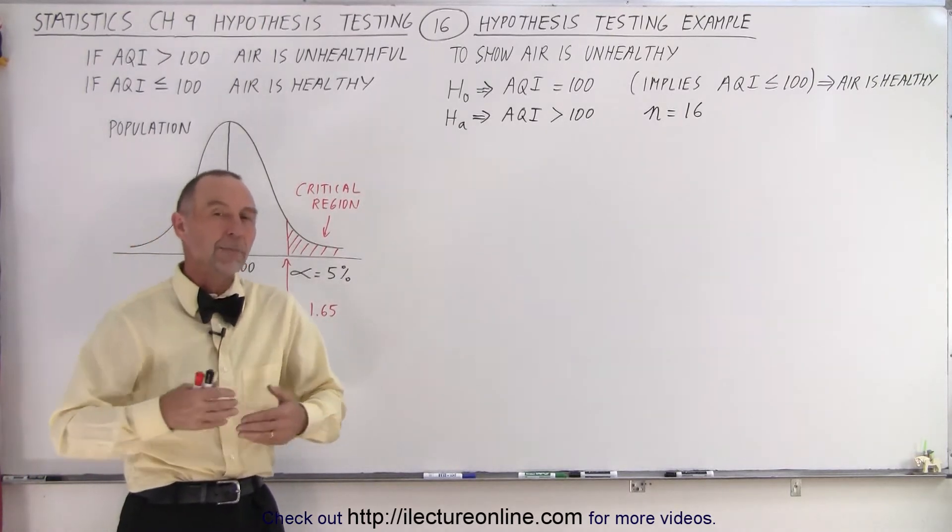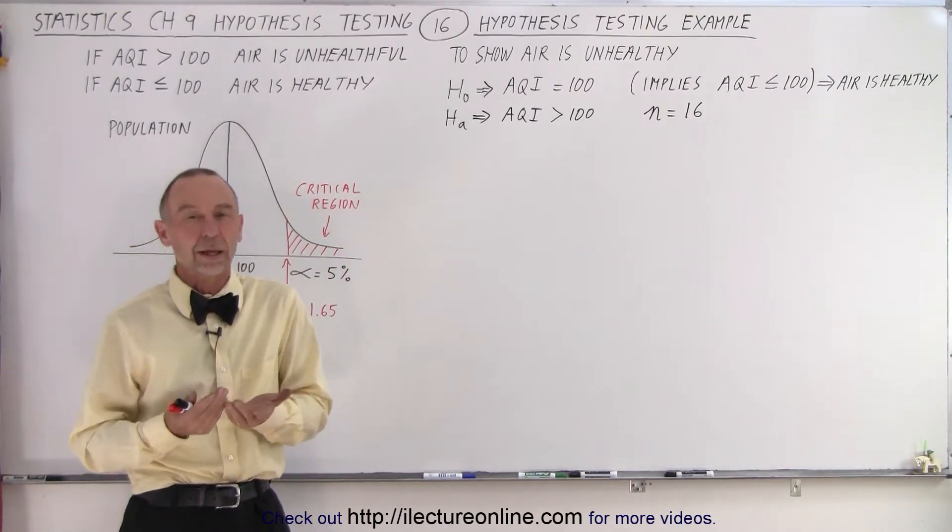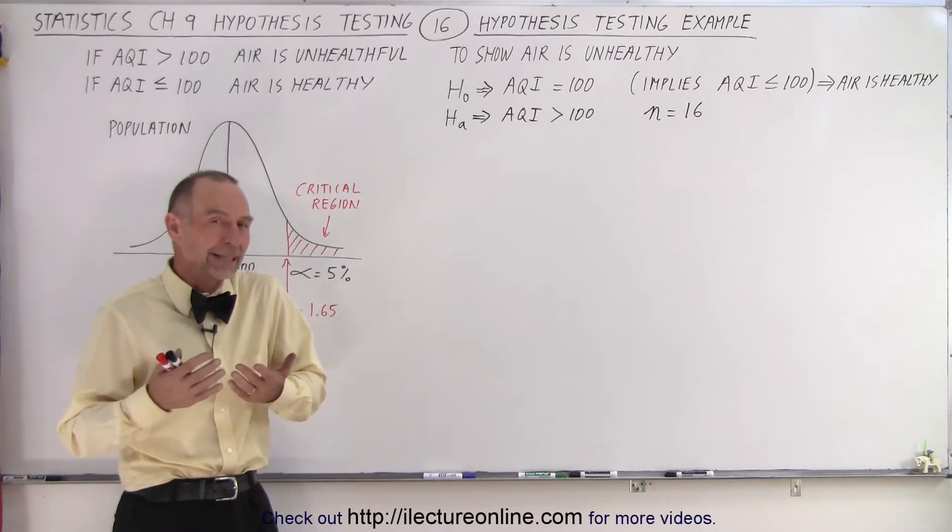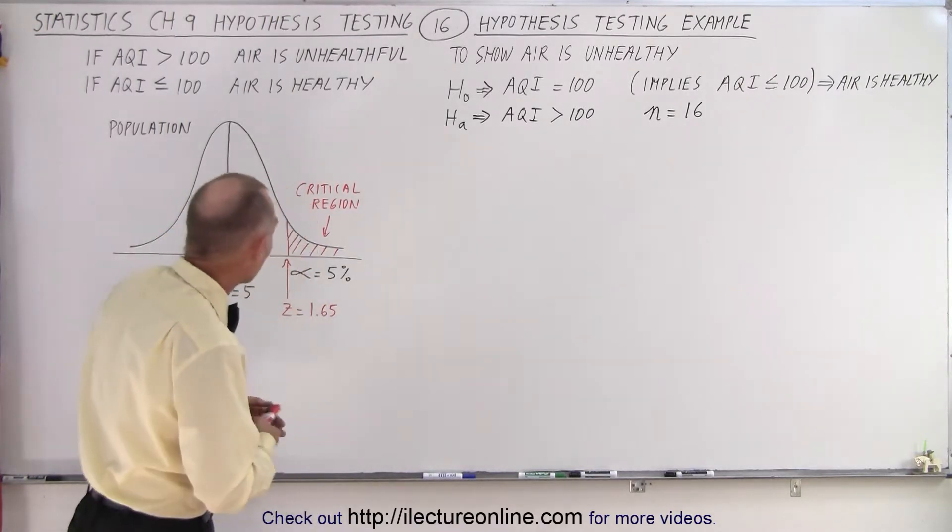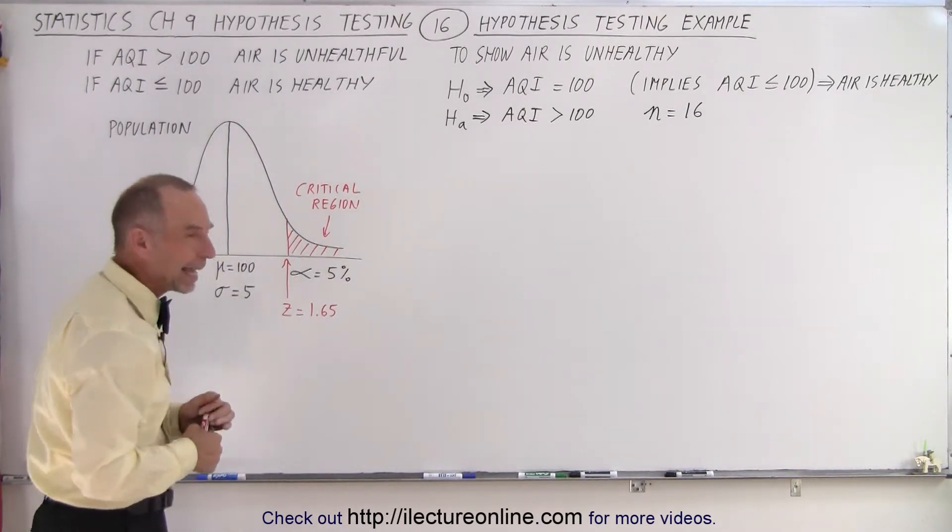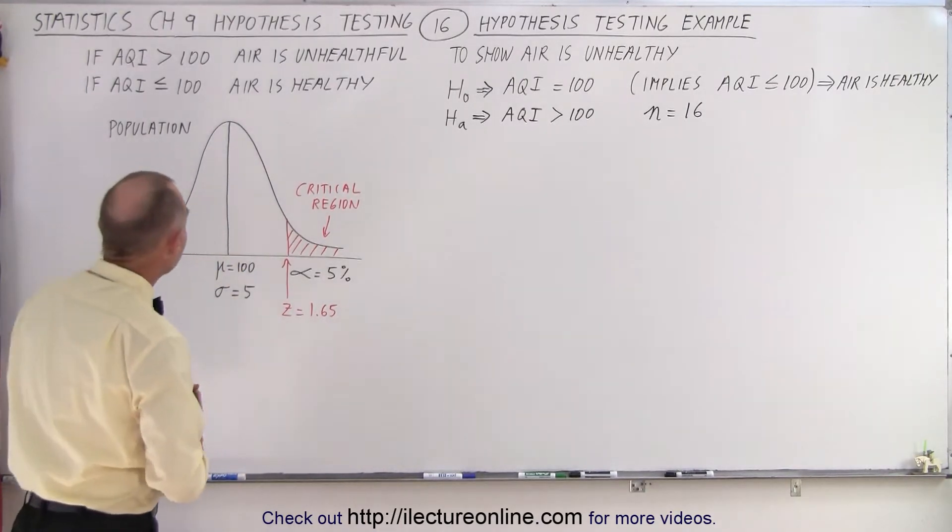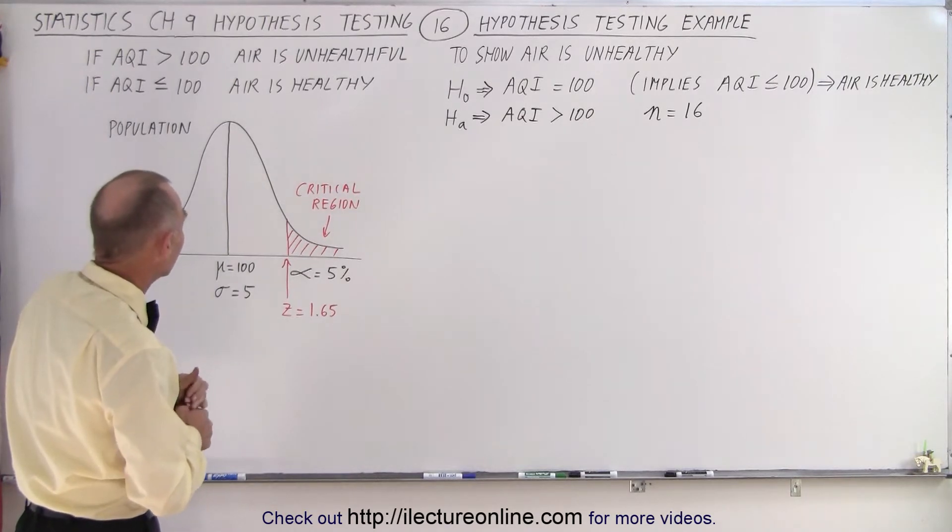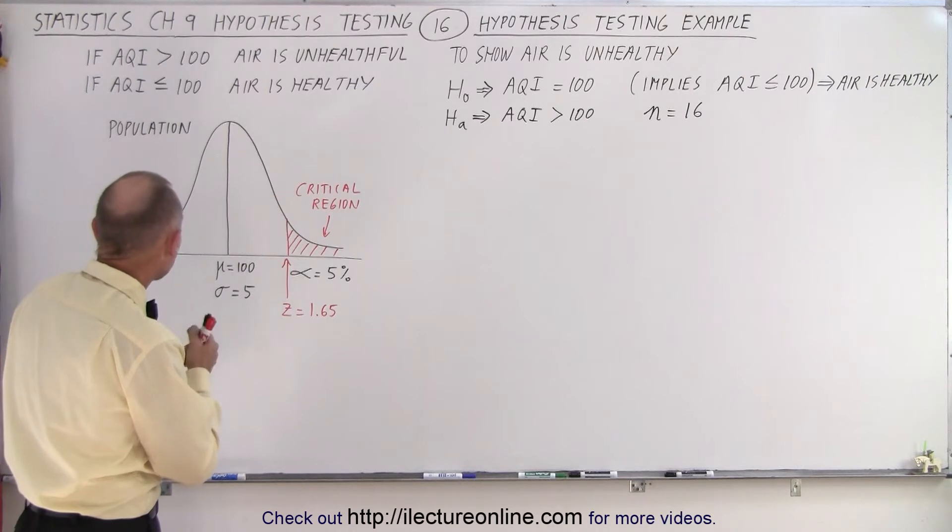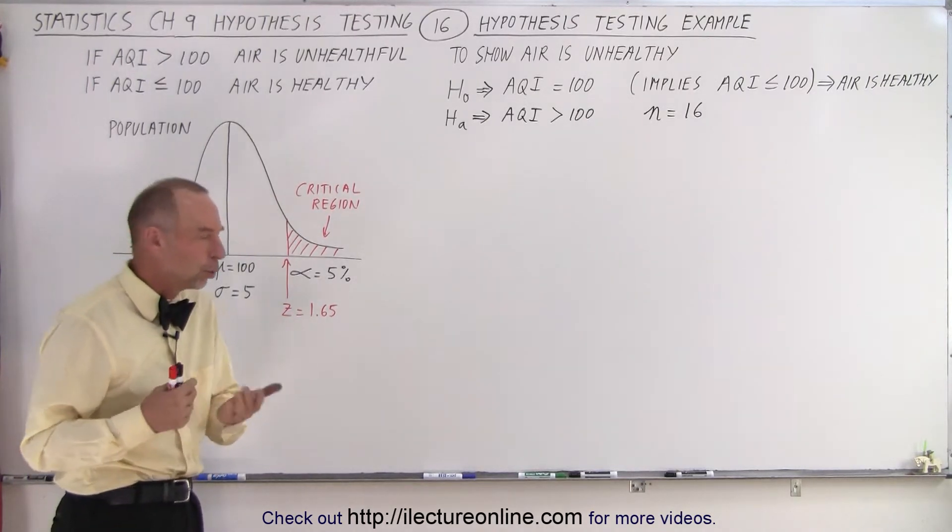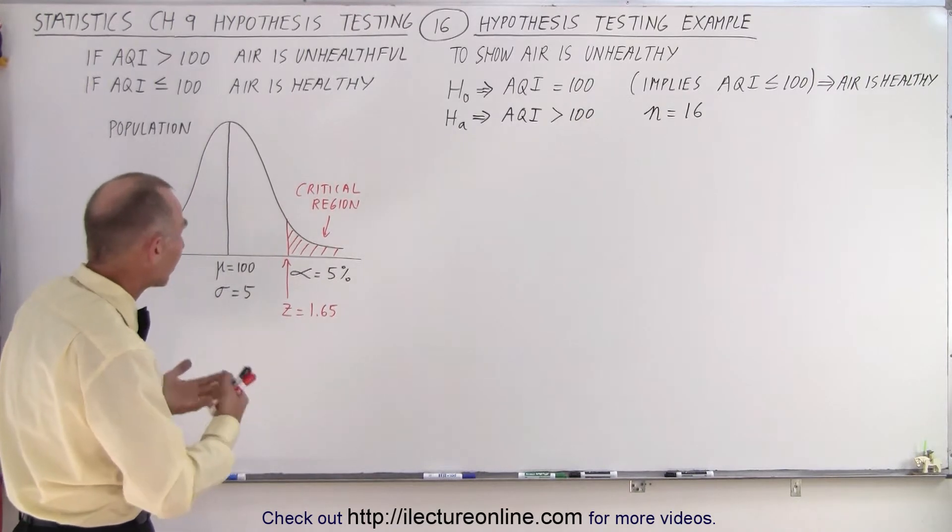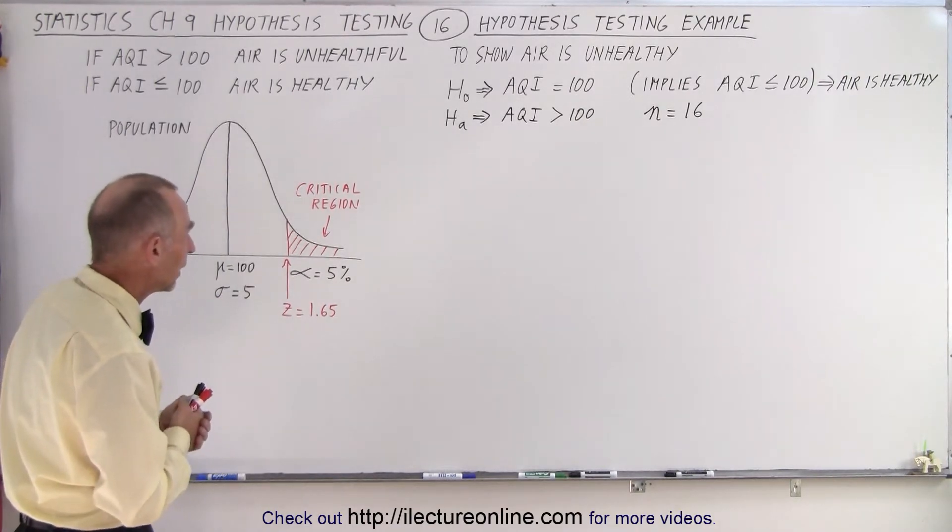In the previous video, we came up with a null hypothesis that was appropriate for trying to prove that the air in LA was unhealthy. So here again, we have the same parameters. If the AQI, the air quality index, is greater than 100, that's considered unhealthy air. And if the AQI is less than or equal to 100, they consider that to be good quality air. It's healthy, you can breathe it without any health problems.